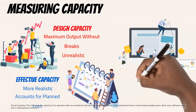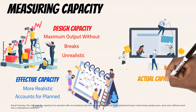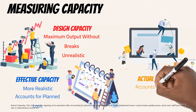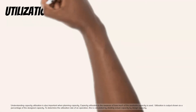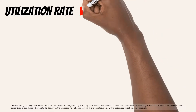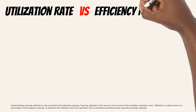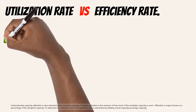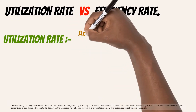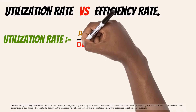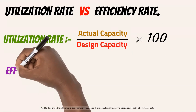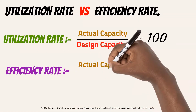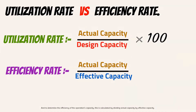Actual capacity measures the capacity of an operation after accounting for both planned and unplanned losses. These unplanned losses could include quality issues, stockouts, staff poor work rate or absenteeism, and so on. Understanding capacity utilization is also important when planning capacity. Capacity utilization is the measure of how much of the available capacity is used — it is output shown as a percentage of the design capacity. To determine the utilization rate, divide actual capacity by design capacity. To determine the efficiency of the operation's capacity, divide actual capacity by effective capacity.